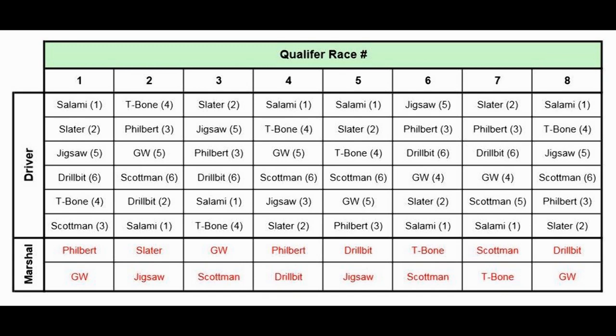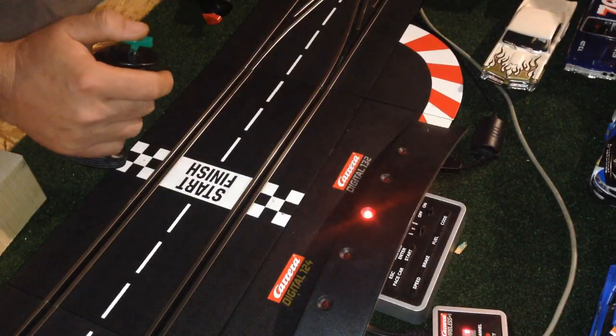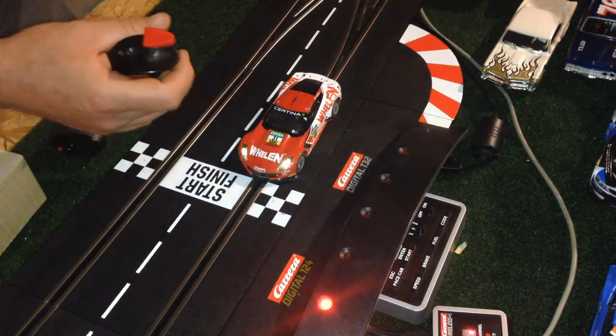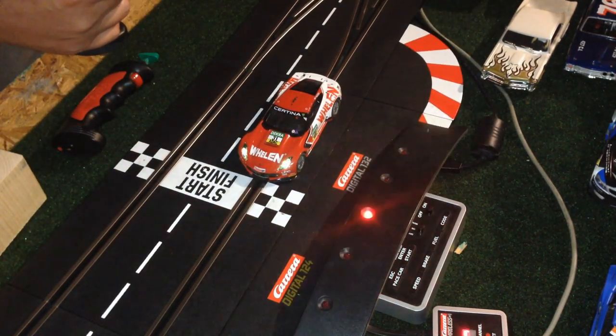If you saw the previous video, you'll recognize this as an example of a schedule we might run. What we try to do is keep the IDs for a driver the same throughout the entire night. If you look closely at this schedule, Salami is always on ID number 1, Slater is always on number 2, and the IDs for all the other racers stay the same for the most part. However, when you've got 8 drivers and only 6 IDs, inevitably someone's going to have to switch an ID for a race or two. The reason we keep IDs with the drivers as much as possible is because when you switch an ID, you have to reprogram your car to a different controller, and that can cause confusion and delays.